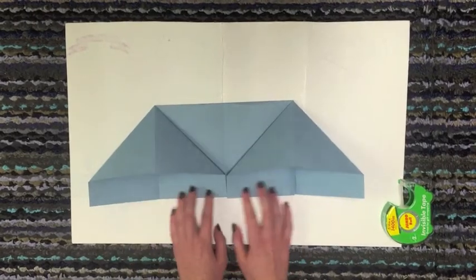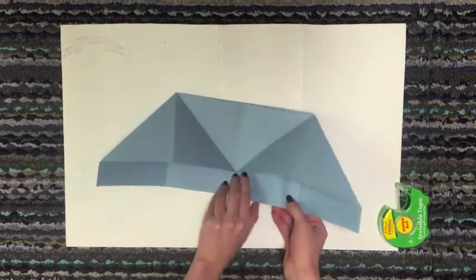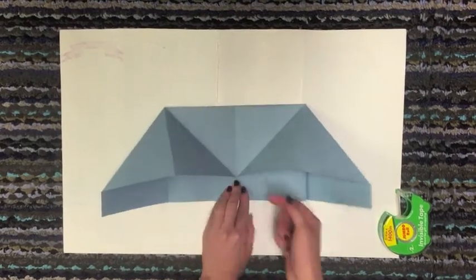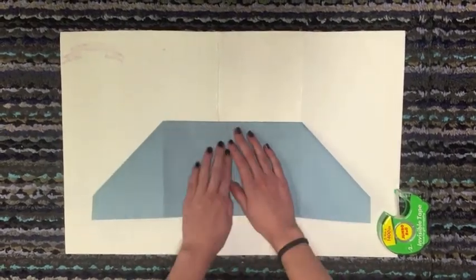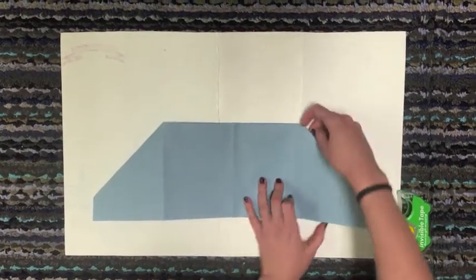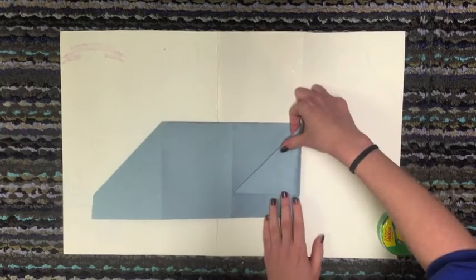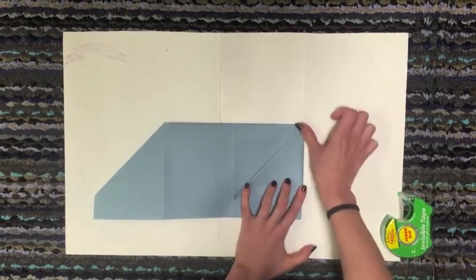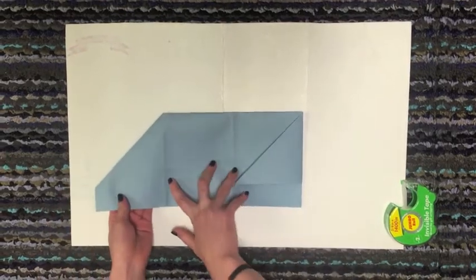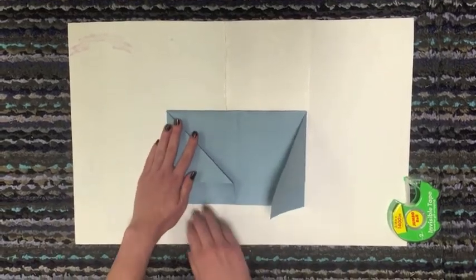Now you got this weird cool looking airplane thing. You're going to turn it over so that you don't see any of the flaps right here. Turn it upside down. And you're going to take one triangle side, turn it into the middle ridge again. You're going to do the same with the other side. Take a wing, turn it into the middle.